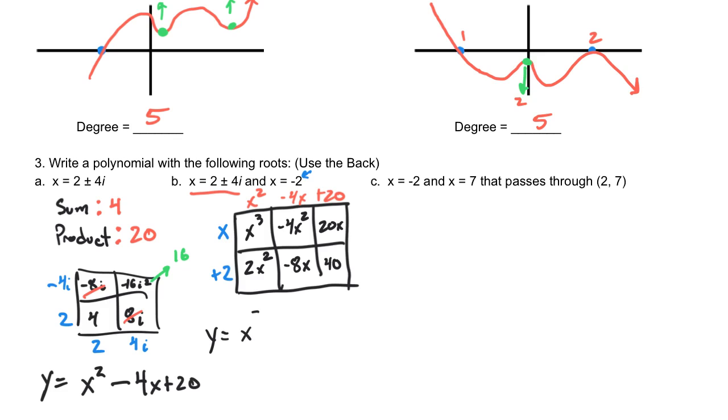And now you just combine your like terms to write your cubic. And so, we start with an x cubed, and it looks like a negative 2x squared, a positive 12x, and a positive 40. And that would be your quadratic, or sorry, that would be your cubic.